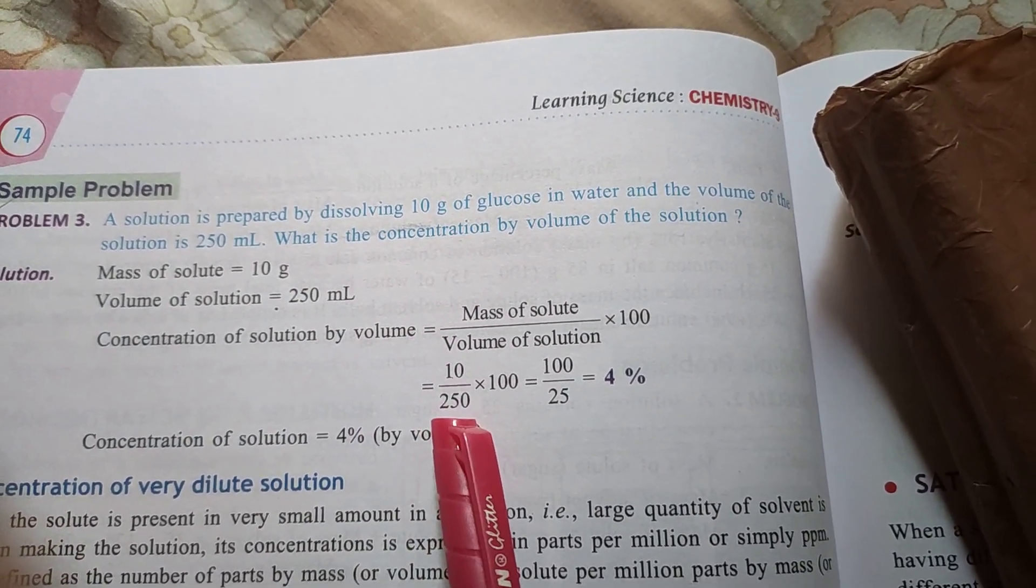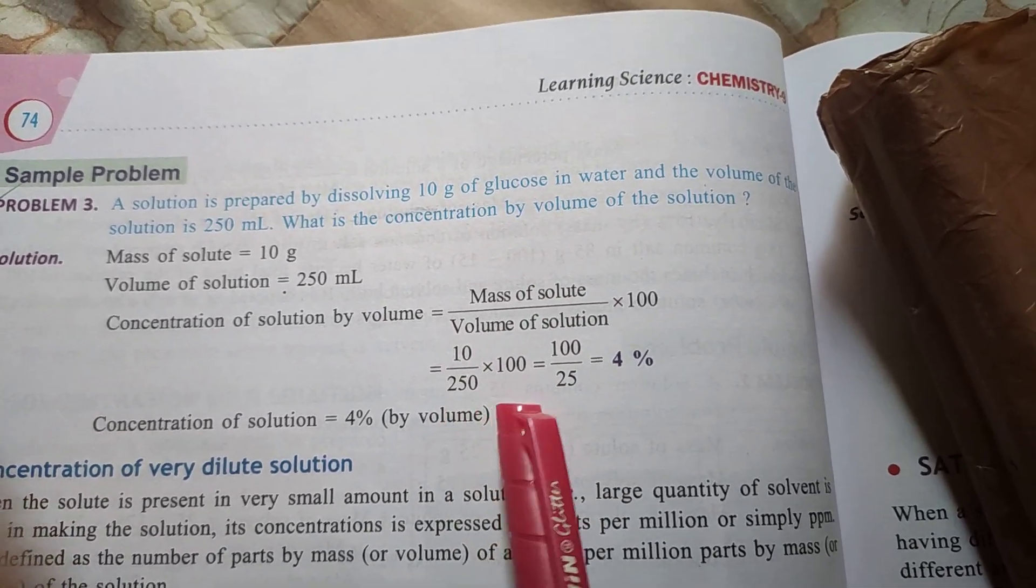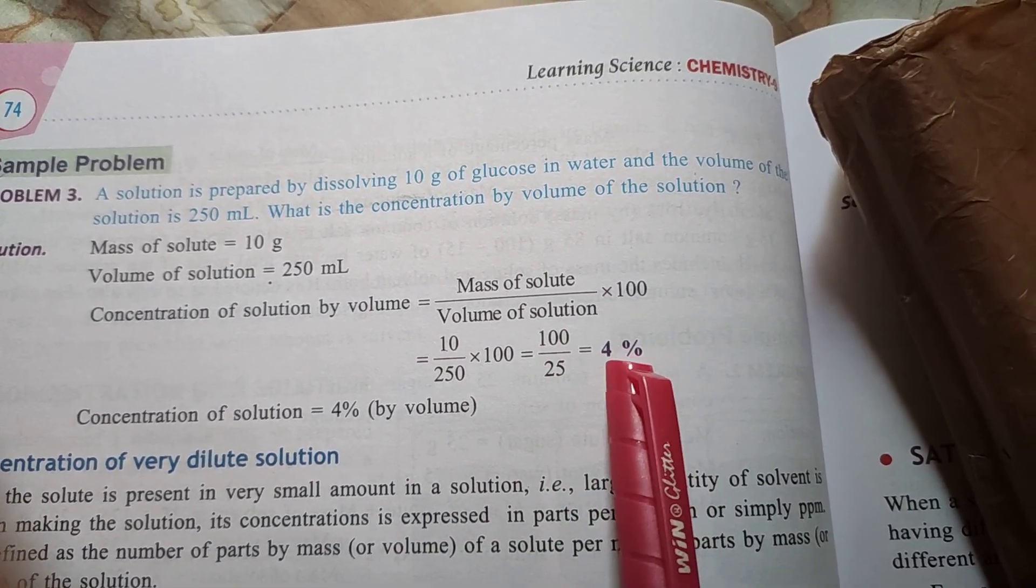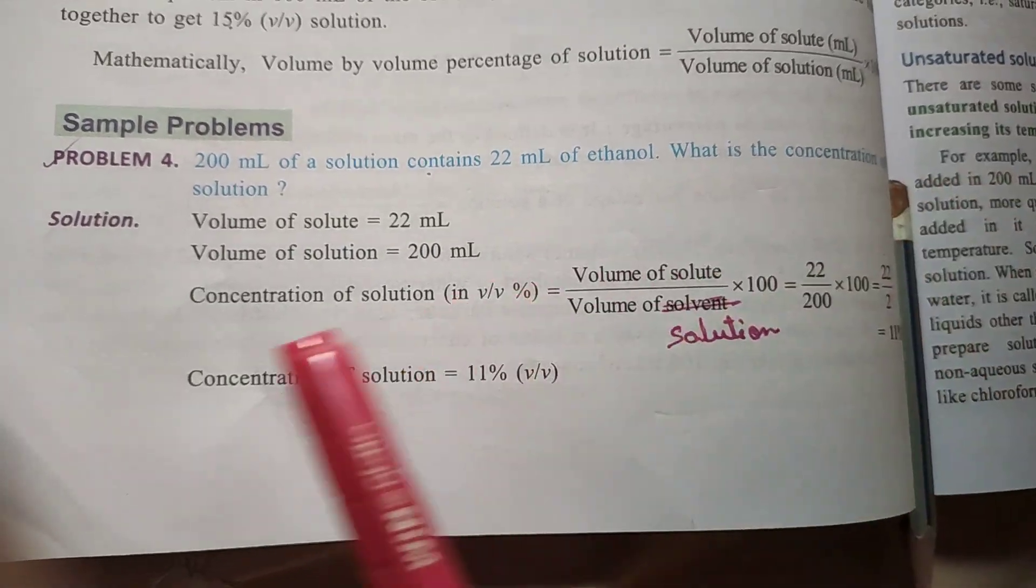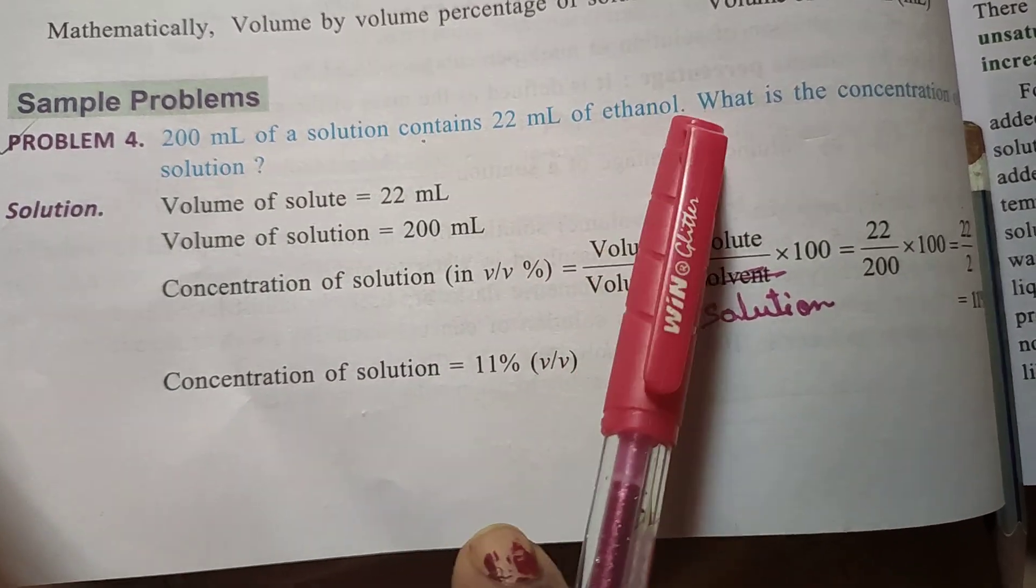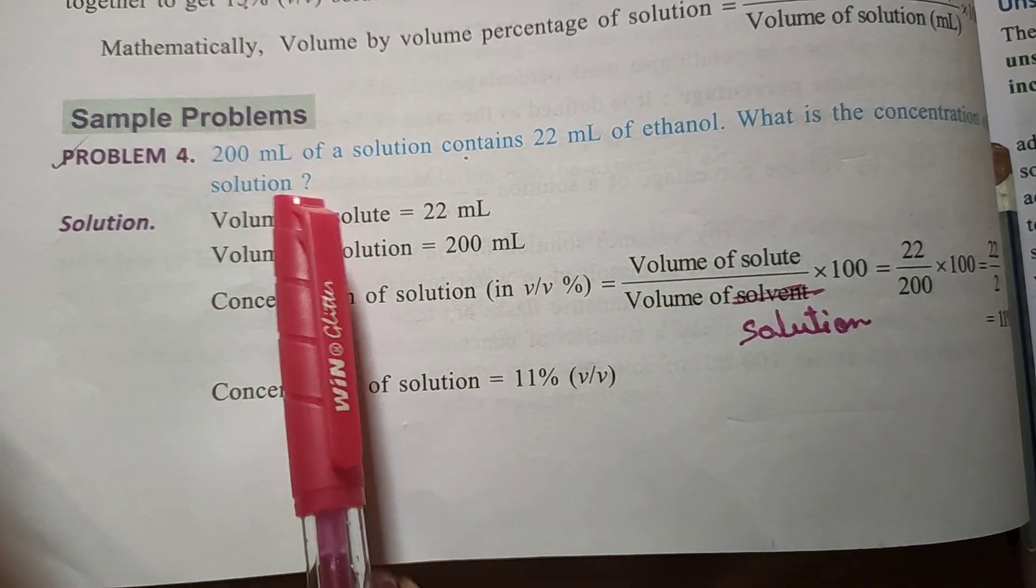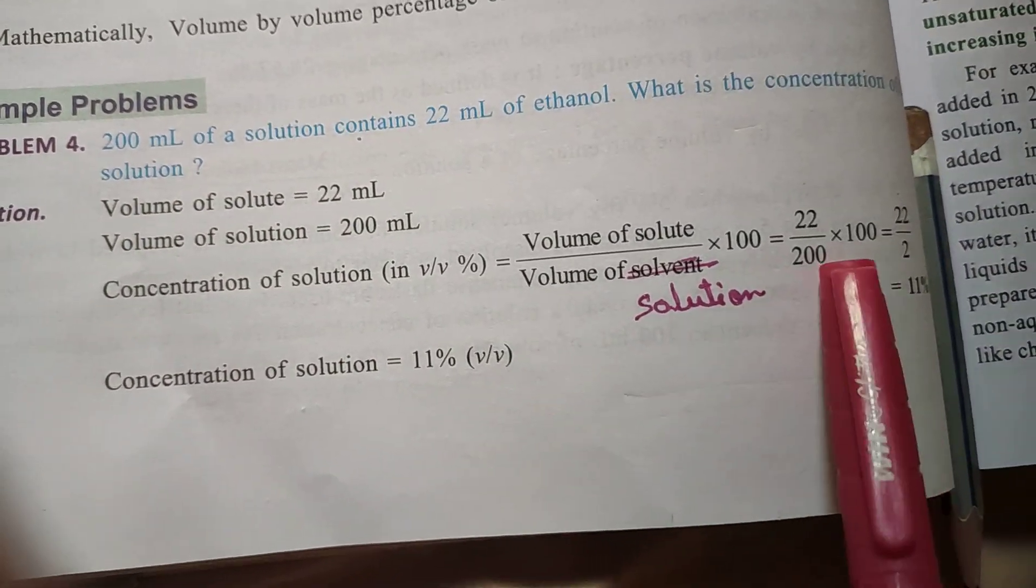Then the solution 250 ml is given, so 250 ml directly we have to put it, and then the amount of solute times 100. The amount of solute is 10, so directly we have to put 10 divided by 250 times 100. Then the answer is 11 percent.